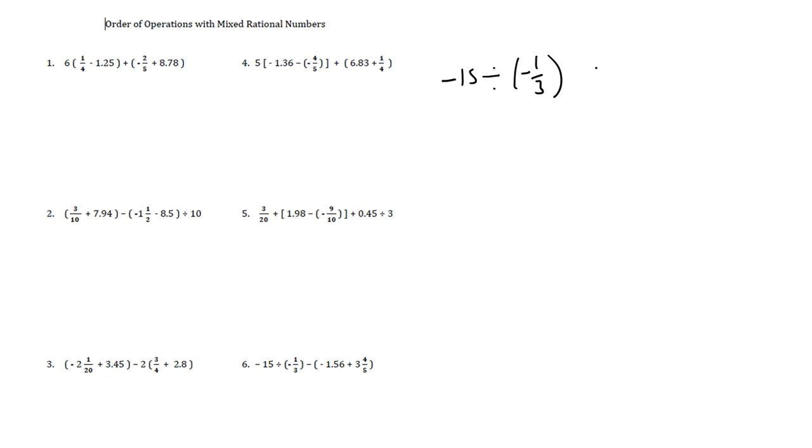Negative 15 divided by in the parentheses negative one third, subtract inside the parentheses negative 1.56 plus three and four fifths. Okay. Here we go. Parentheses first.